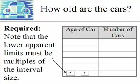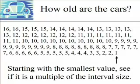Our interval size is 3, so the lower apparent limit needs to be something like 0, 3, 6, or 9 — some value that's a multiple of 3. Looking back at our ranked distribution and focusing on the smallest value, the smallest value is 1: there was a person who reported their car was only 1 year old.